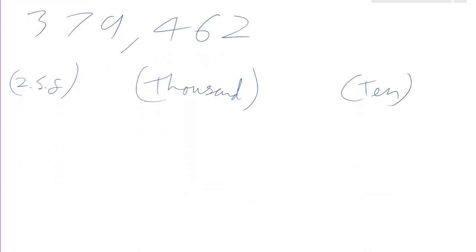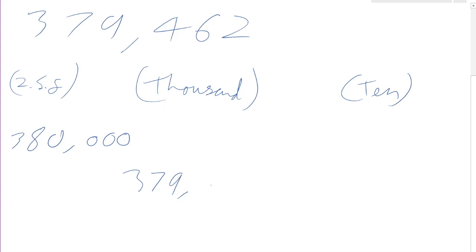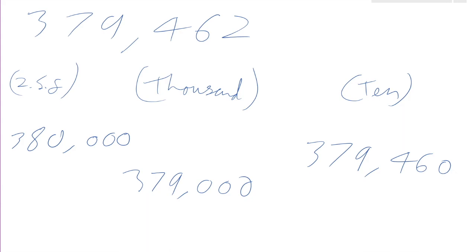Answers: to two significant figures, that's going to be 380,000 — which is of course the same as to the nearest ten thousand. To the nearest thousand it's going to be 379,000 — we round down. And to the nearest ten it's going to be 379,460. You probably wouldn't want to know to the nearest ten, but it's good to be able to practice with whatever they might give you.